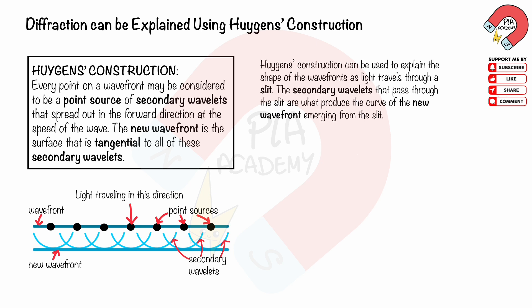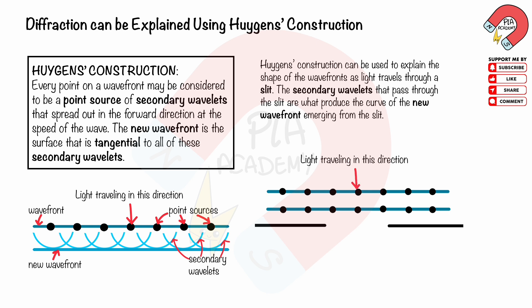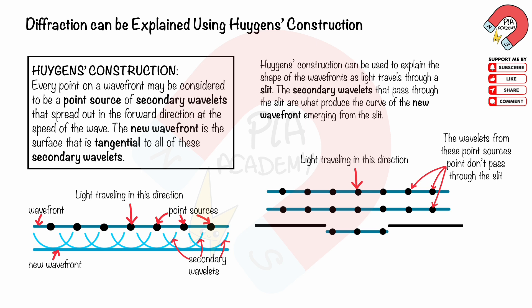Huygens' construction can be used to explain the shape of wave fronts as light travels through a slit. The secondary wavelets that pass through the slit produce the curve of the new wave front emerging from the slit. The wavelets from point sources outside the slit do not pass through, while the wave front that does pass through the slit creates new secondary wavelets forming a curved new wave front.